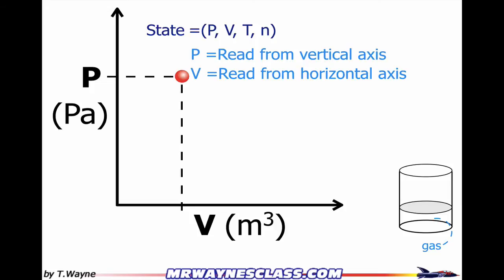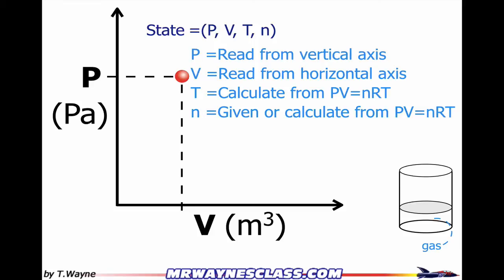The temperature and the number of moles are going to be calculated from pv=nrt. So I can calculate the temperature, or I can calculate the moles. Somehow I've got to be either given T or the number of moles in order to calculate the second. So that's how the dot represents a state on the diagram — all the variables from pv=nrt.